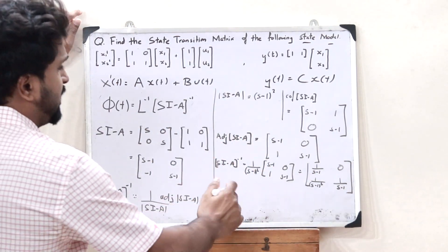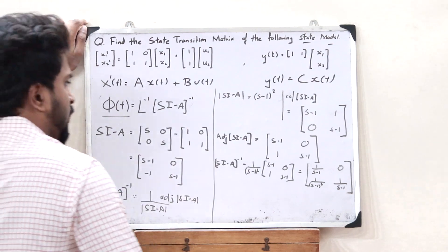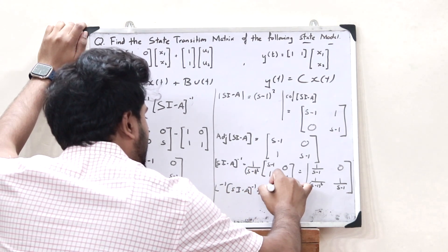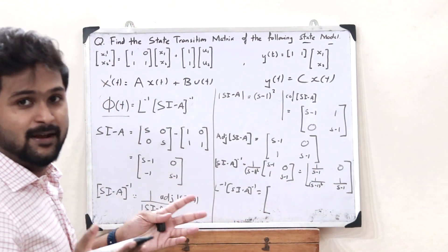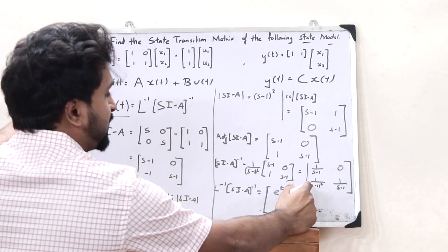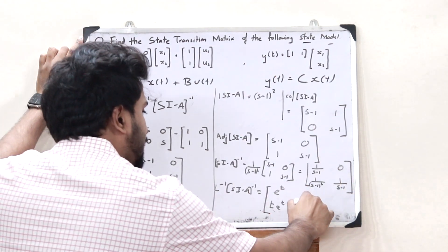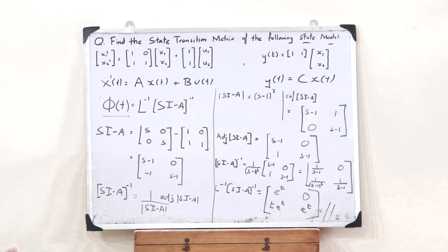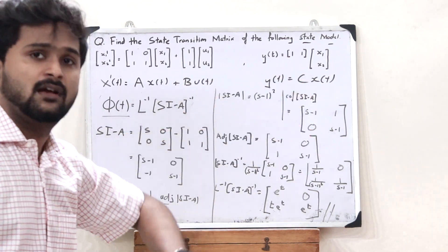Now all we have to do is take the inverse Laplace transform of (sI - A)^-1, since the state transition matrix phi(t) = L^-1{(sI - A)^-1}. The inverse Laplace transform of 1/(s-1) is e^t, of 0 is 0, of 1/(s-1)^2 is t·e^t, and of 1/(s-1) is e^t. Thus the state transition matrix is phi(t) = [e^t, 0; t·e^t, e^t].